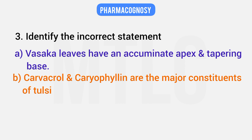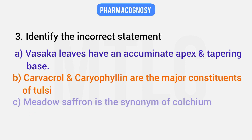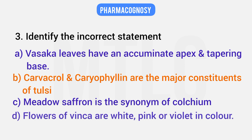Continuing the third question: Meadow saffron is a synonym for Colchicum — this can be confusing. Colchicum flowers appear in white, pink, and violet — three colors. That statement is correct.